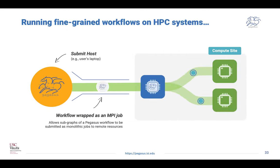Pegasus also has a tool called Pegasus MPI Cluster which allows users to run large fine-grained workflows on HPC systems. You can have a workflow composed of thousands of single-core tasks, and when run on an HPC resource, Pegasus translates the workflow into an MPI job run using Pegasus MPI Cluster. It runs tasks internally in a simple master-worker paradigm, allowing fine-grained workflows to fit onto HPC systems.